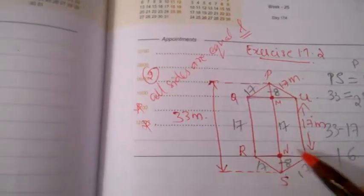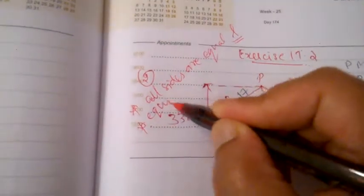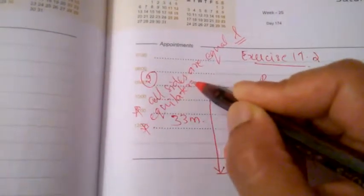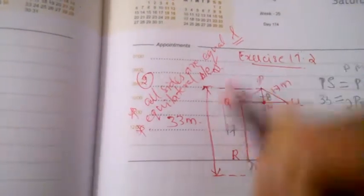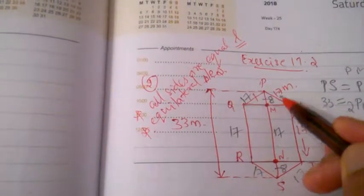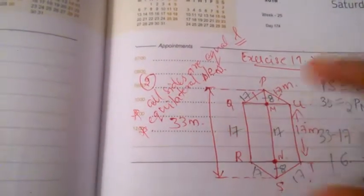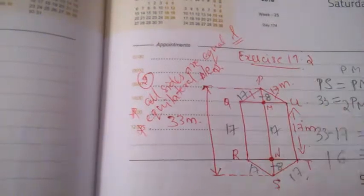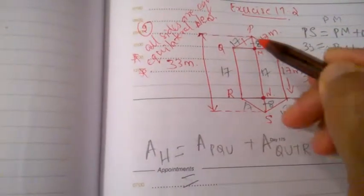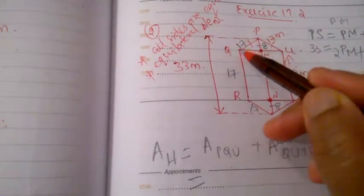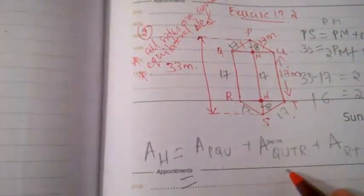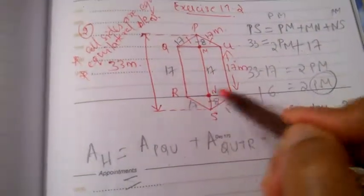The triangles that you form will be equilateral triangles. Equilateral triangles means all sides are of equal length. So we have to know that the area of this hexagon will be equal to area of triangle PQU plus area of rectangle QUTR plus area of triangle RTS.